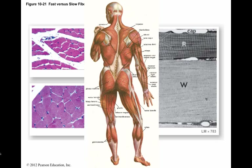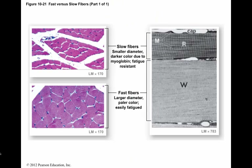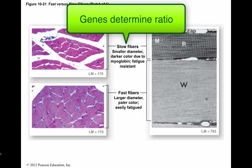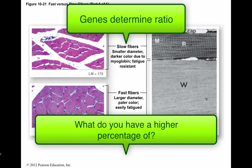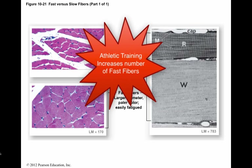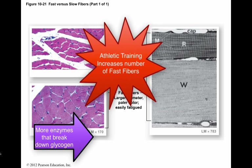Many back and calf muscles are dominated by slow fibers, and these muscles contract almost continuously to help us remain upright. Our genes determine the percentage of fast versus slow fibers in each muscle. Athletic training can also increase the ratio of intermediate fibers to fast fibers.